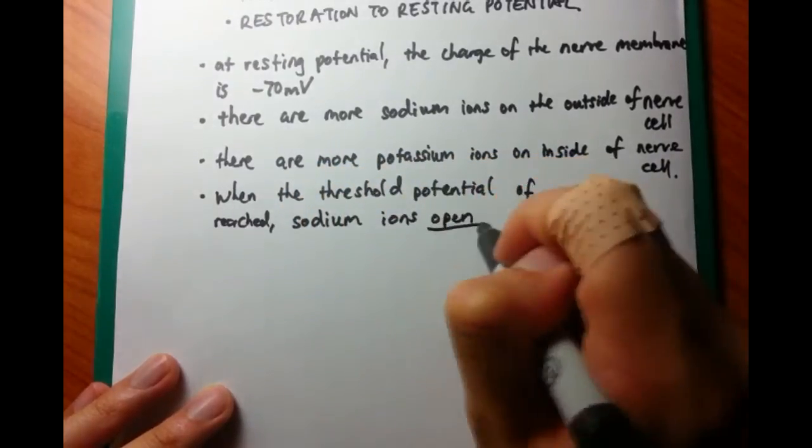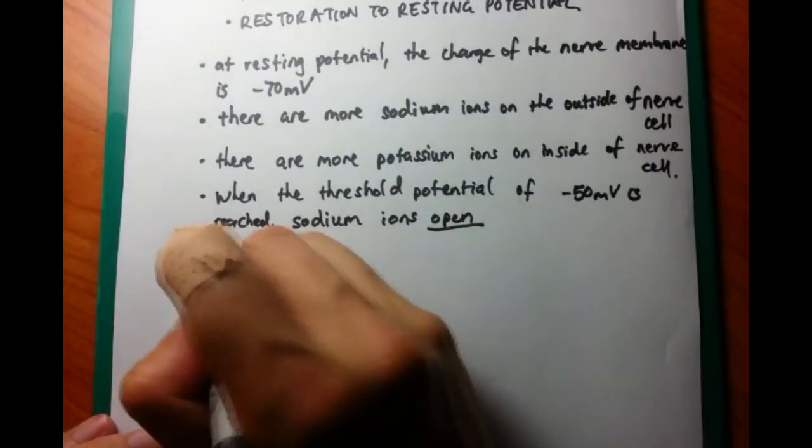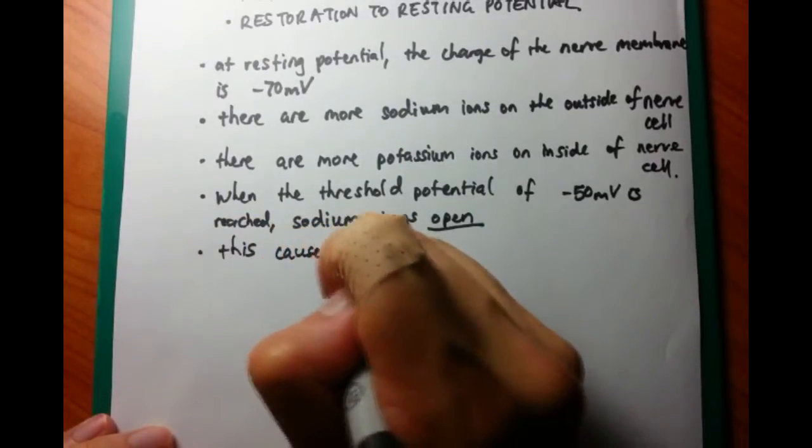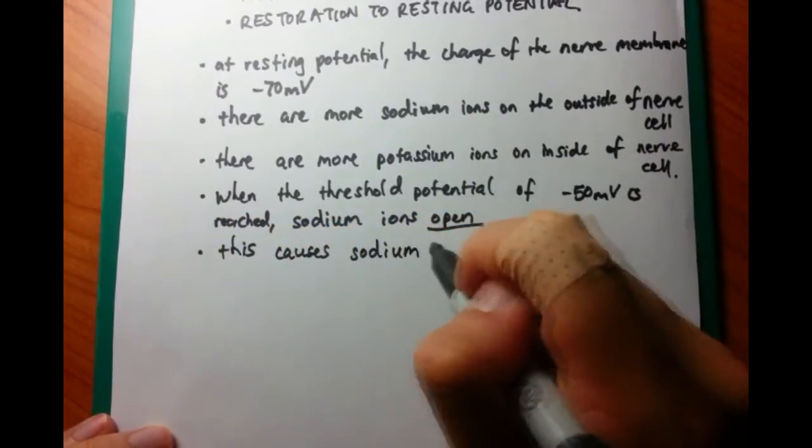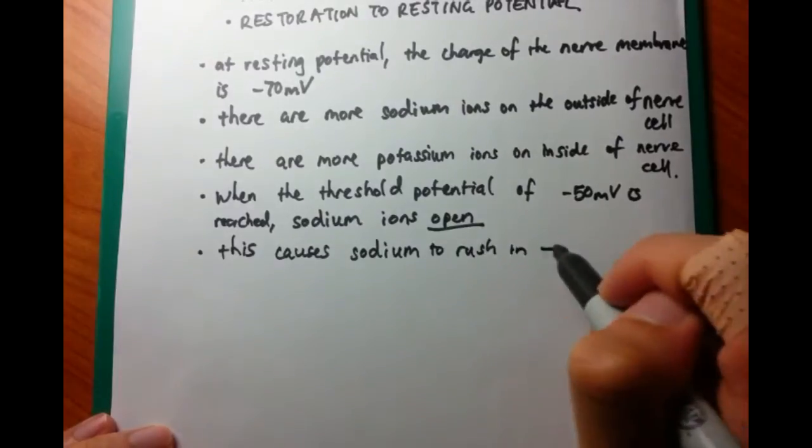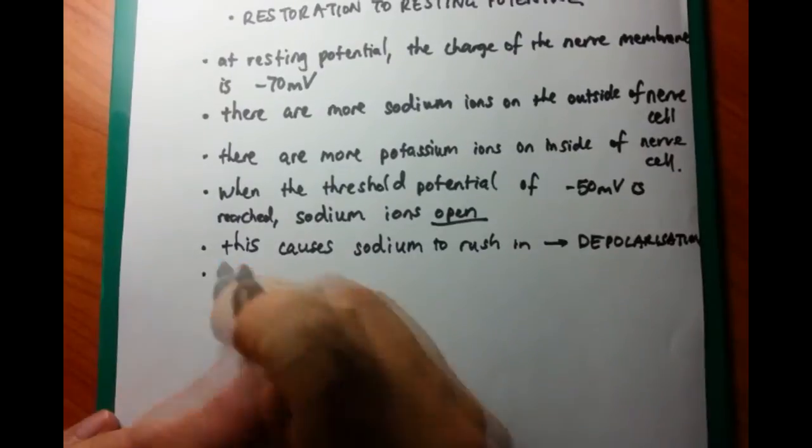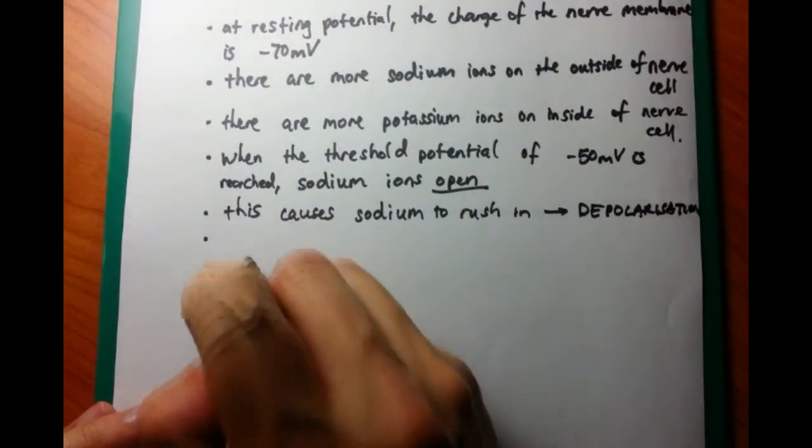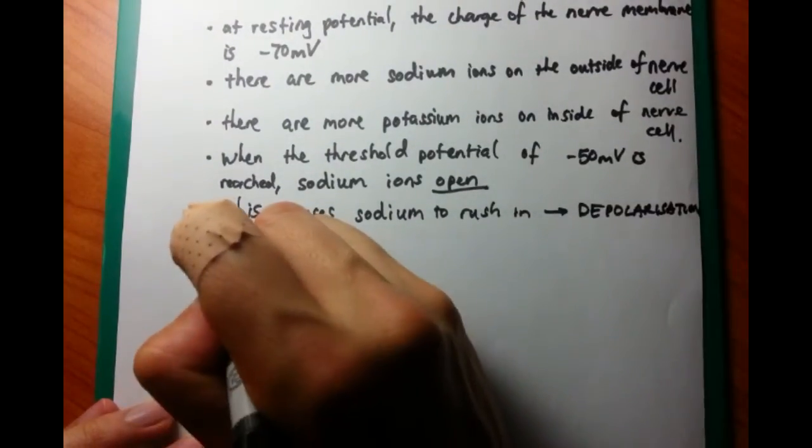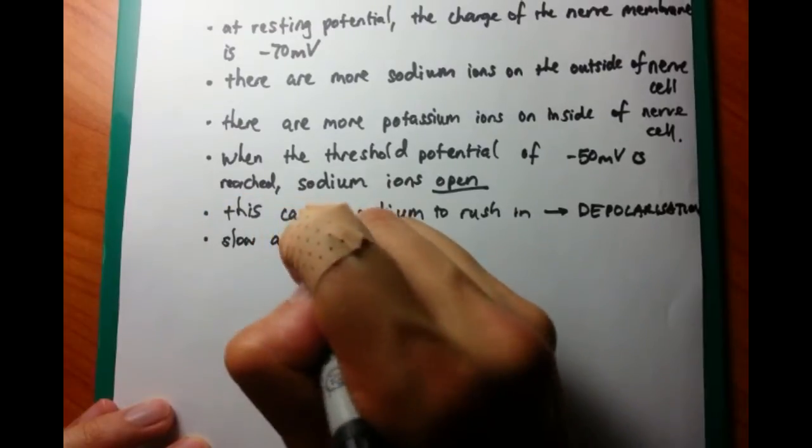Once these sodium ion channels open, this causes sodium to rush inside the cell. Sodium is Na+, which is a plus, so it's a positive ion. As this rushes in, it's going to go from negative 50, and it's going to go positive, positive, positive, up to about positive 30 millivolts. And this is called depolarization.